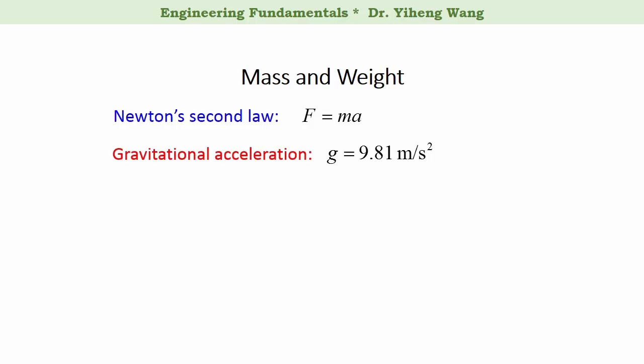Therefore, in SI unit system, for an object with a mass of one kilogram, its weight is calculated by this equation. Its mass is one kilogram. G, the gravitational acceleration, is 9.81 meter per second squared. Therefore, the weight force is 9.81 Newton.